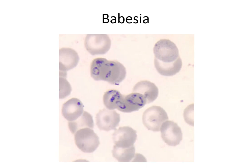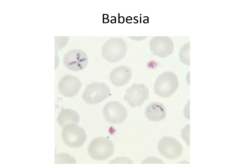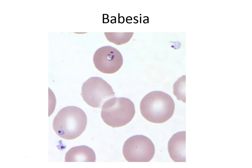Babesia: the rings are on the inside and outside of red cells; there should be no other forms like schizonts. It is transmitted by the Ixodes tick. Patients have flu-like symptoms. It can have a Maltese cross ring formation.